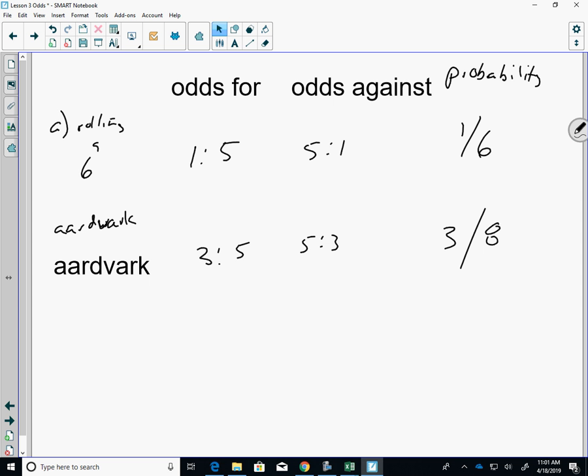Getting a head when you flip a coin. It's 50-50. So the odds are? One to one. Heads compared to tails. Odds against? Also one to one. Probability? One out of two.